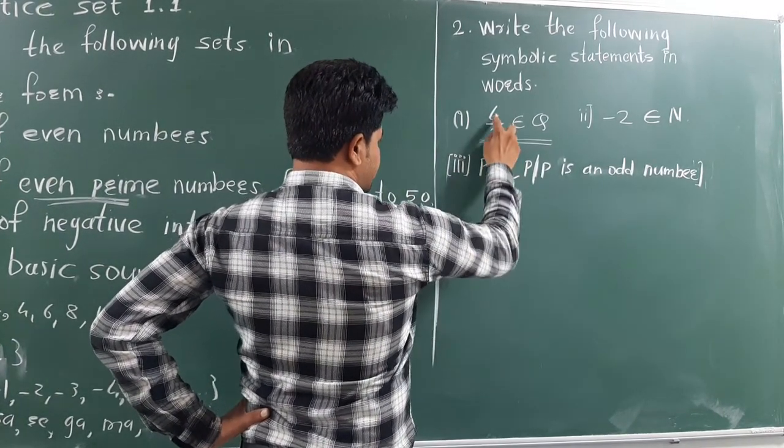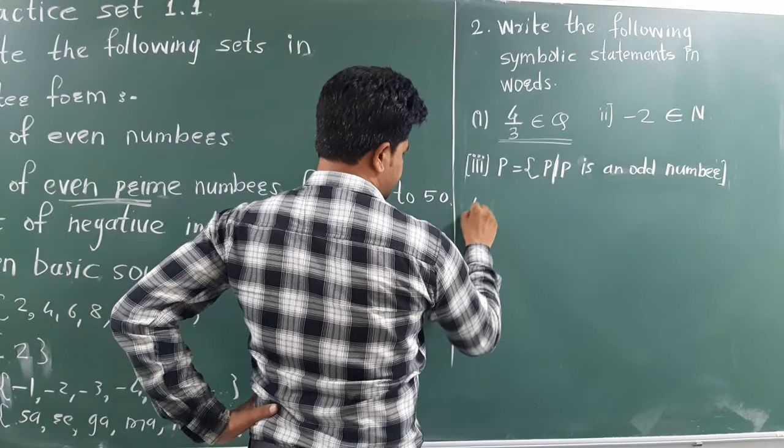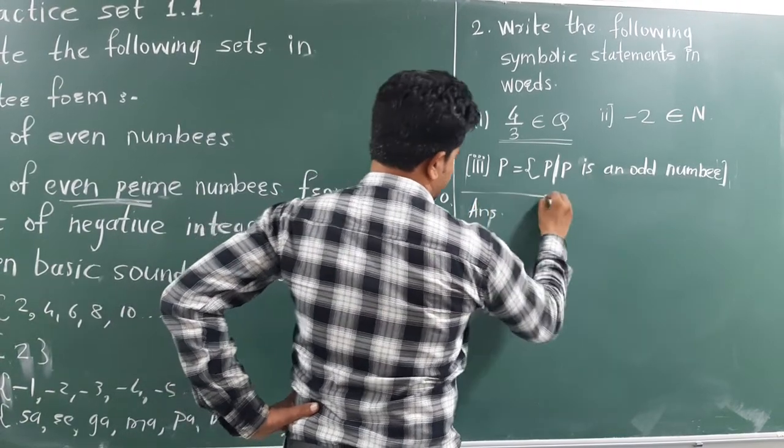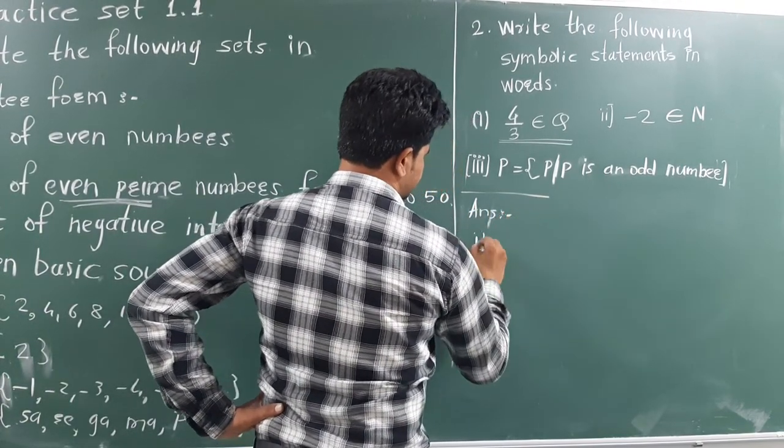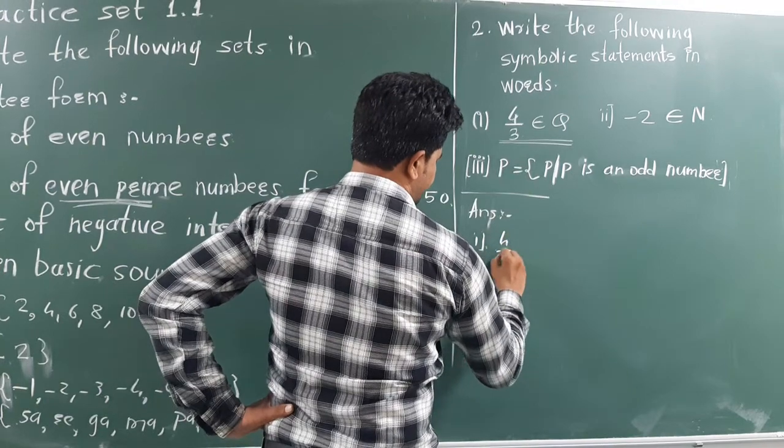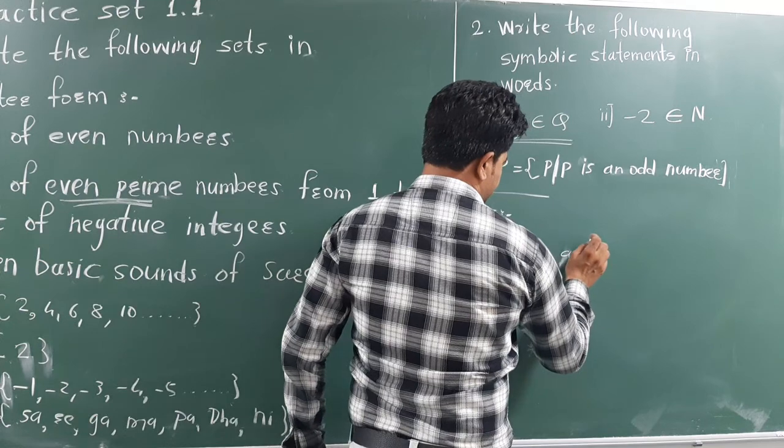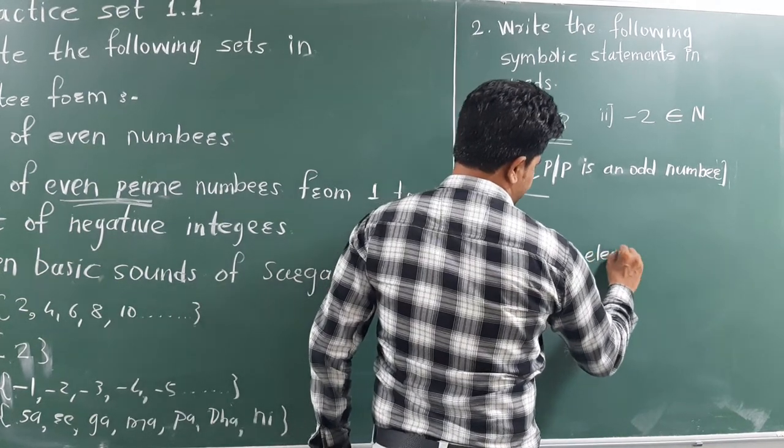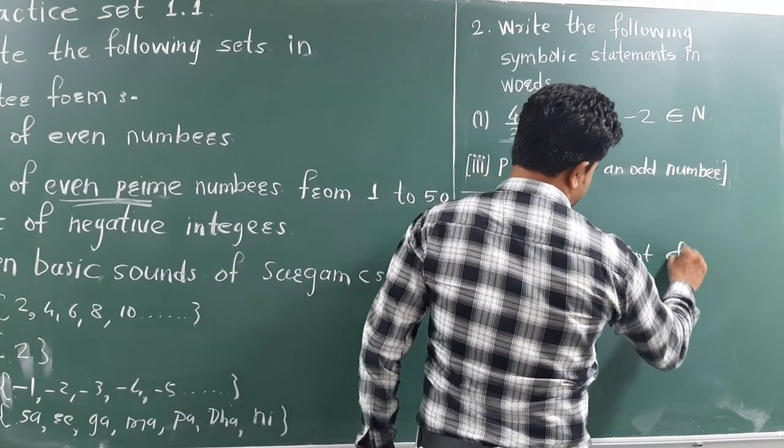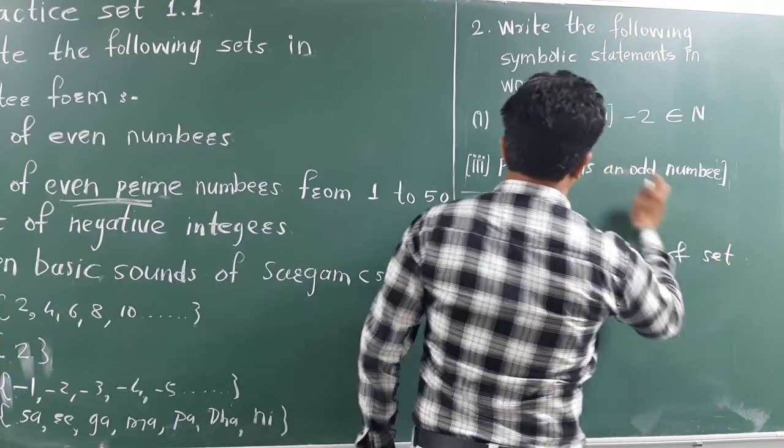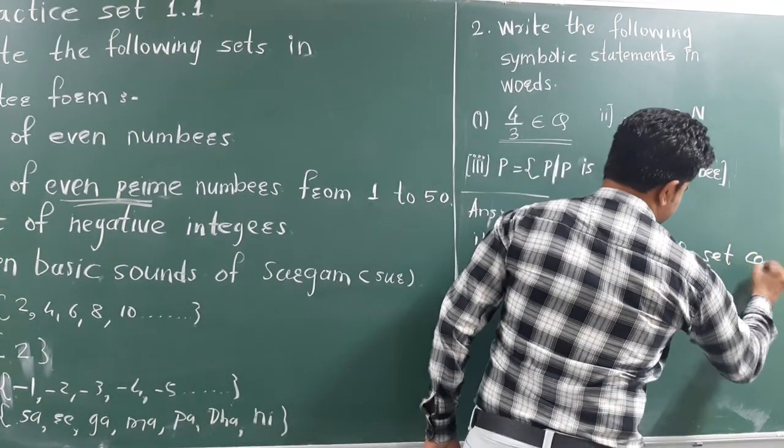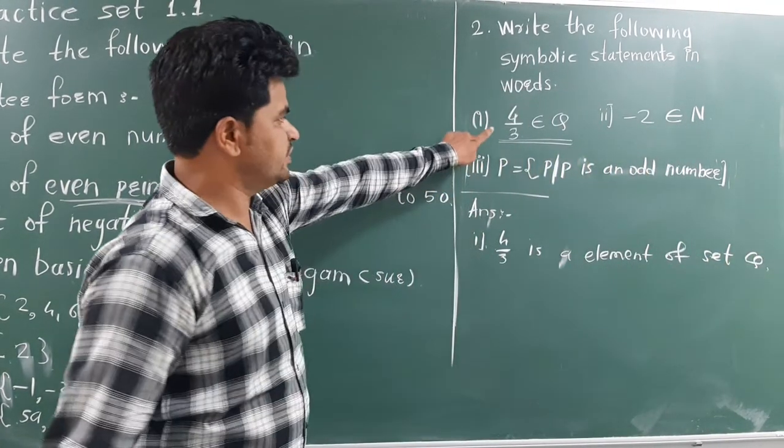What is the statement of first symbolic statement here in word? This is 4 upon 3. 4 upon 3 is an element of set Q. This is the statement in word of first symbolic.